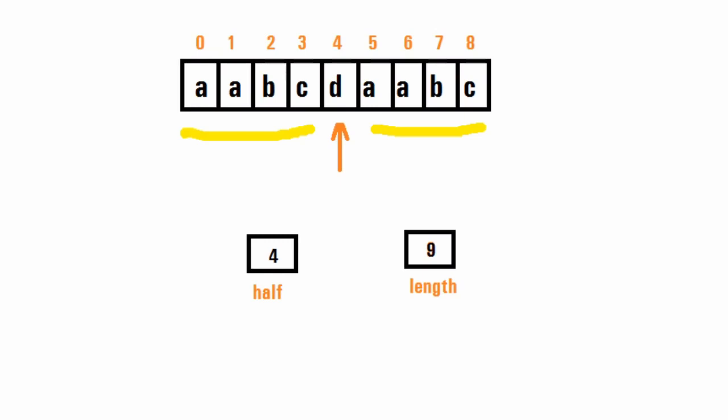If the substrings are not equal, we move the pointer one step backward — from index four to index three. We then repeat the same process: take two substrings, one from zero to two ('aab') and another from six to eight ('abc'). This stepping back continues until we reach the zeroth index. If no matching pair is found, we return minus one.